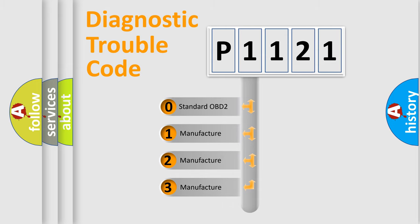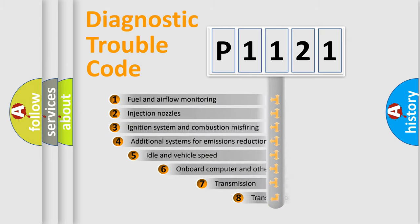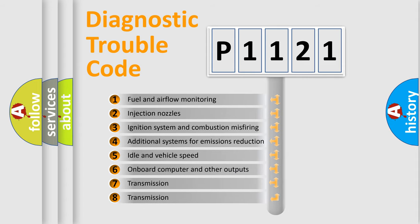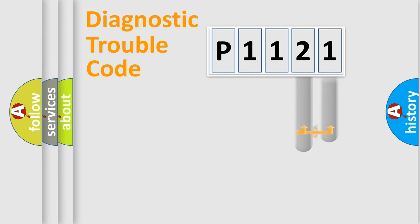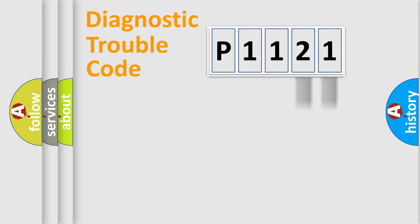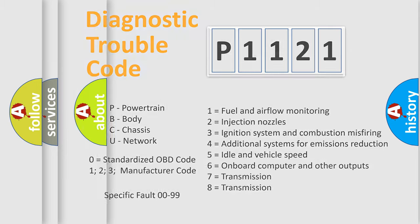If the second character is expressed as zero, it is a standardized error. In the case of numbers 1, 2, or 3, it is a more specific expression of a car-specific error. The third character specifies a subset of errors. This division is valid only for the standardized DTC code, and only the last two characters define the specific fault of the group. Such a division is valid only if the second character code is expressed by the number zero.